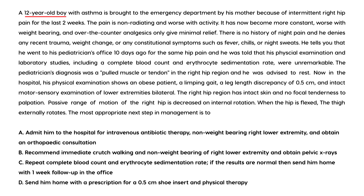Second vignette: a 12-year-old boy with asthma presents to the emergency department with intermittent right hip pain for the last two weeks, worse with activity and weight bearing, with only minimal relief from analgesics. He was previously told by his pediatrician it was a pulled muscle. Now he presents with an obese, limping gait, leg length discrepancy of 0.5 cm, and decreased internal rotation of the right hip. When the hip is flexed, the thigh externally rotates.